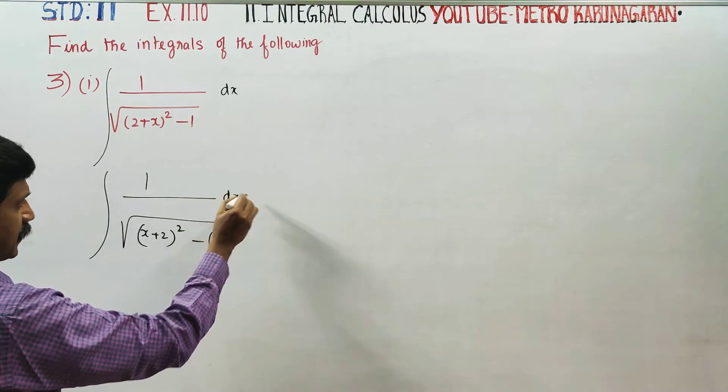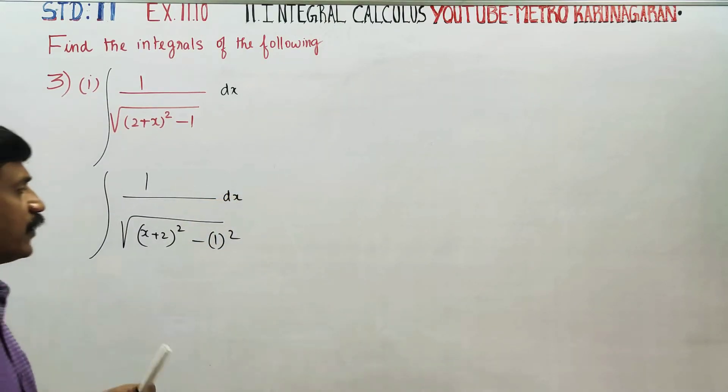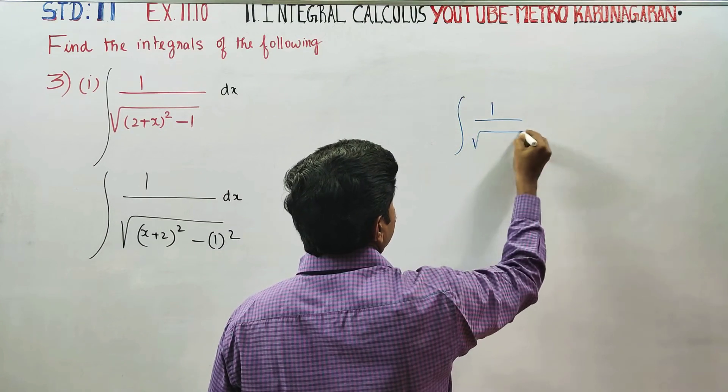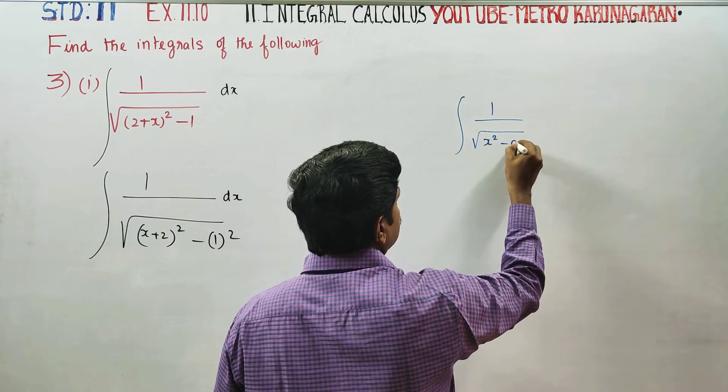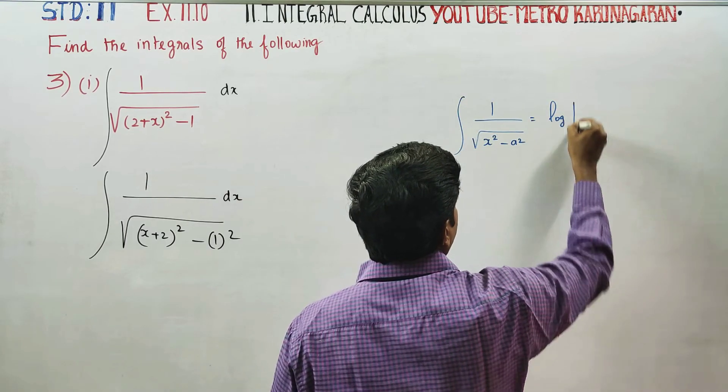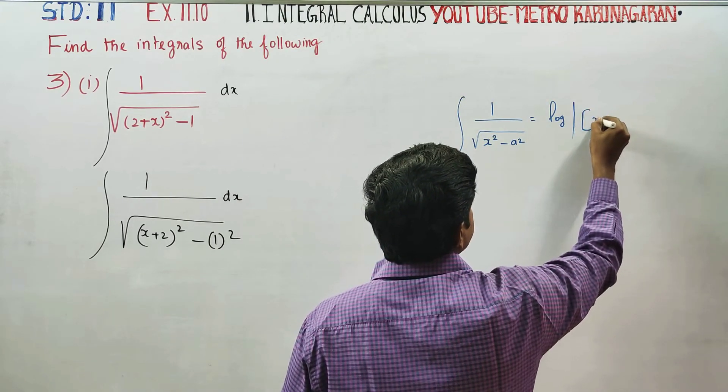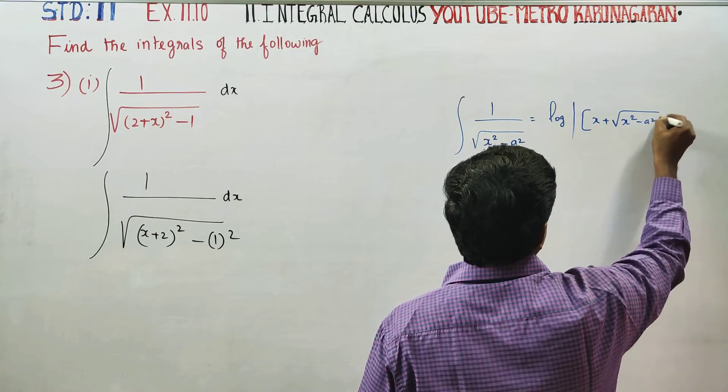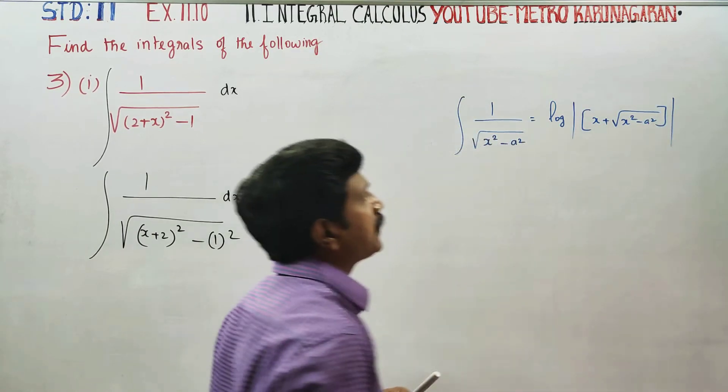Why are we doing this? It's a readymade formula. Integration of 1 by square root of X square minus A square is equal to logarithm of X plus square root of X square minus A square. It's a readymade formula.